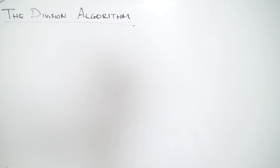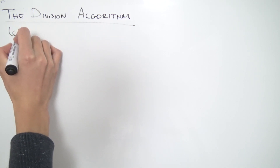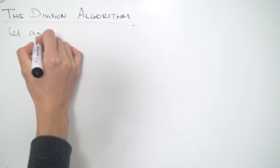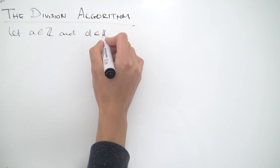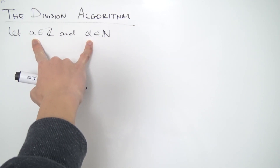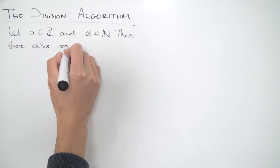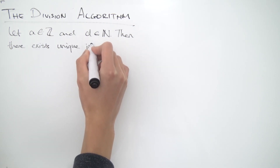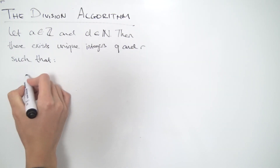Greetings everybody. Today we're going to be proving the division algorithm. So what exactly is this division algorithm? First of all, let A be some integer and D be some natural number. So these are two numbers that we can choose. Then there exist unique integers Q and R such that we have the following.